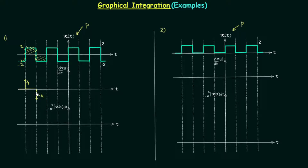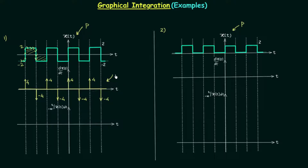In the same way we can complete the remaining waveform. The same pattern repeats from minus infinity to infinity, and we can say that the differentiation of signal xt is periodic in nature.